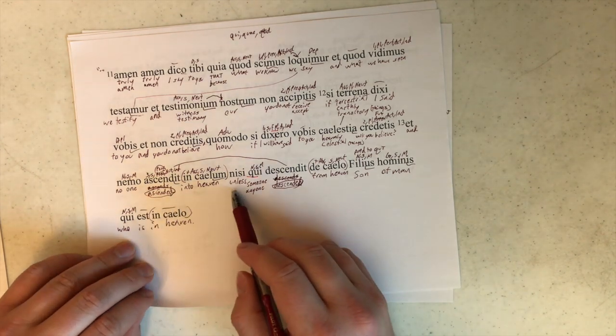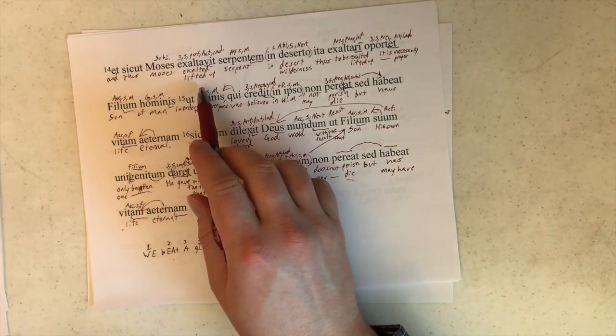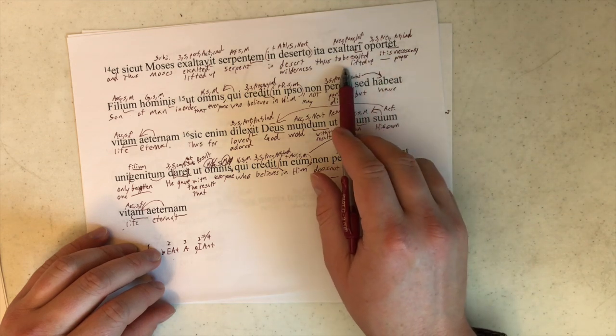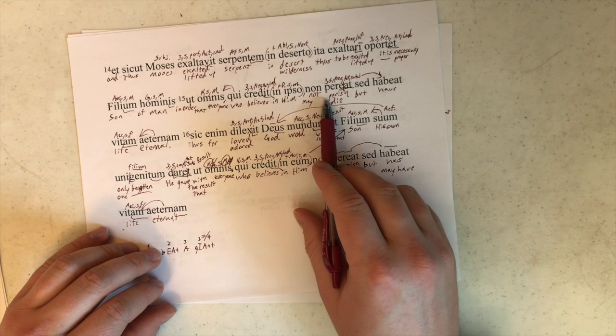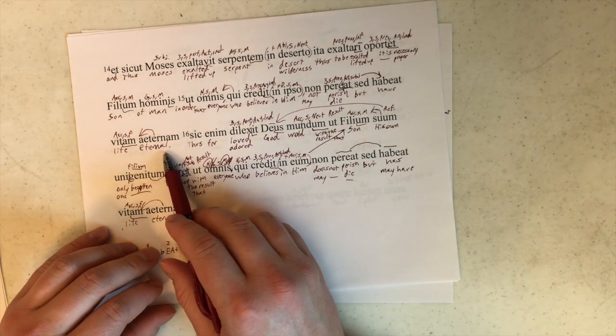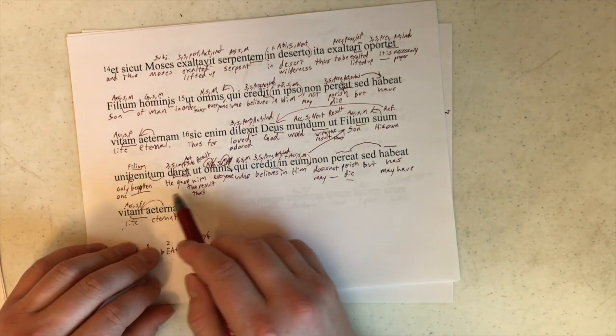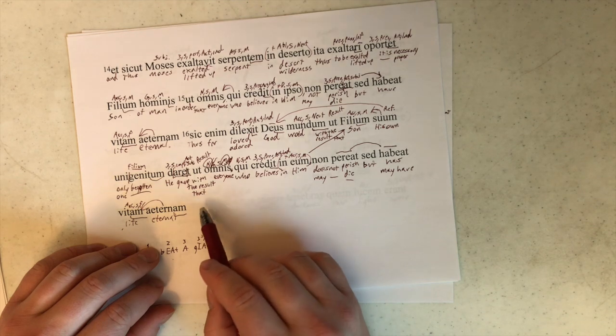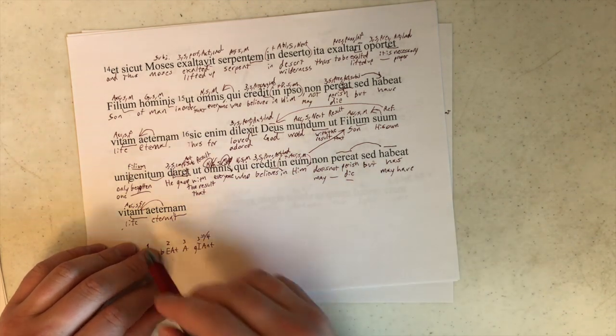And no one ascended into heaven unless someone descended from heaven, son of man who is in heaven. And thus Moses, exalted servant in wilderness, thus it is necessary or proper for son of man to be exalted in order that everyone who believes in him may not die but have life eternal. For thus God adored world with the result that his own son, only begotten, he gave with the result that, technically purpose as it's supposed to be from the Greek, everyone who believes in him does not perish but has life eternal.